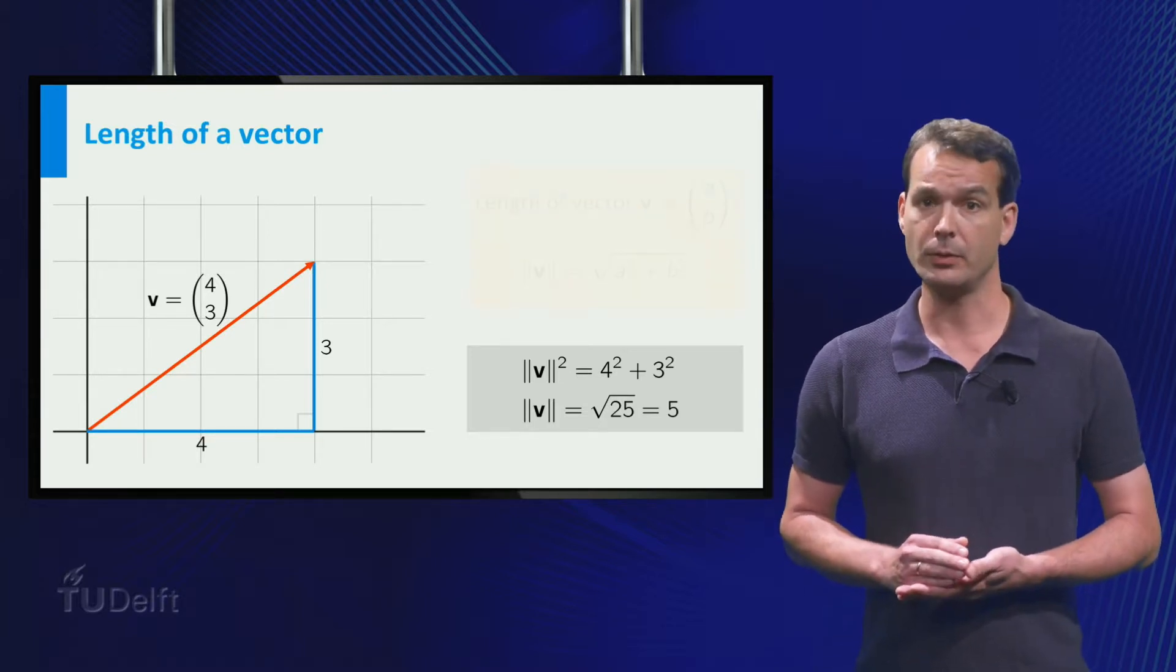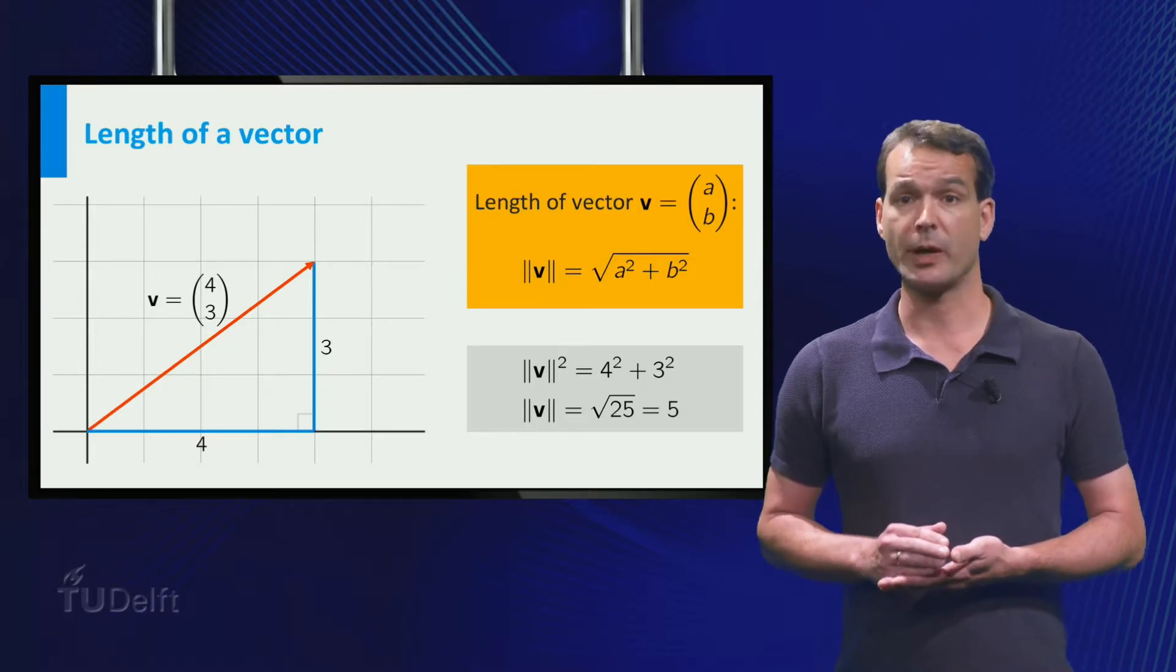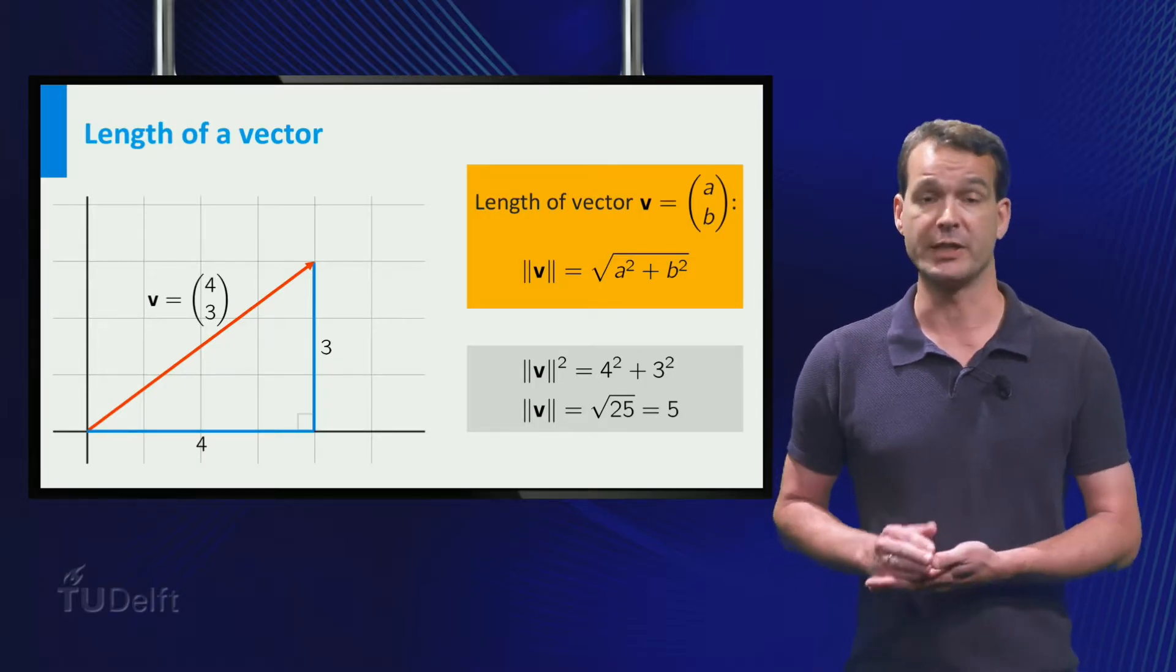In general, the length of the vector is the square root of a squared plus b squared.